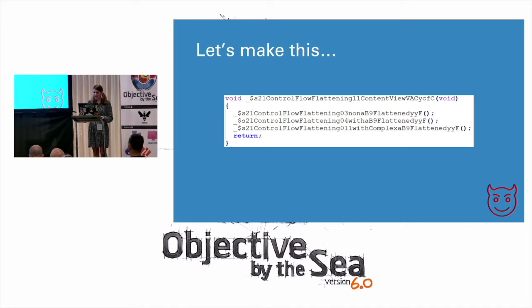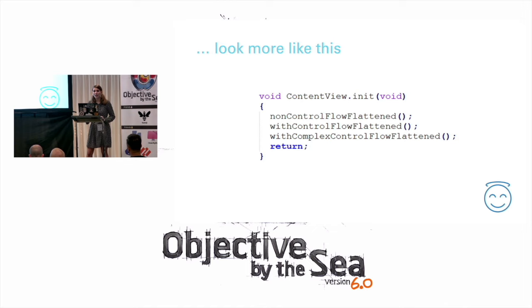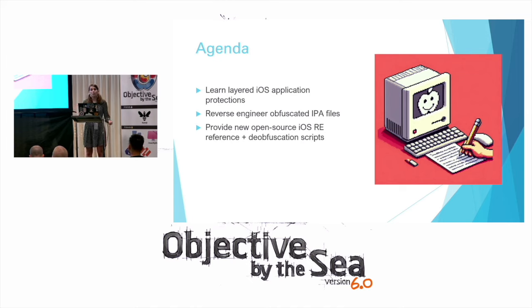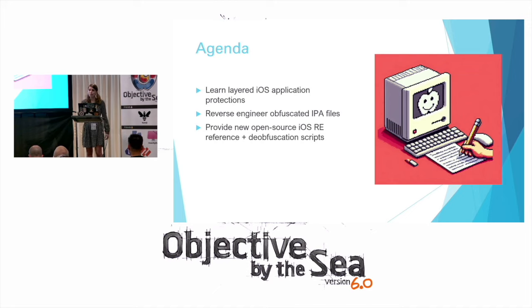Let's get right into it. Let's take this mangled iOS application code and de-mangle and de-obfuscate some Swift and Objective-C iOS application binaries and make them look more readable. Our agenda today: we're going to learn about the layered approach to iOS application protections, reverse engineer some obfuscated iOS IPA binaries, and I'm going to provide a new open-source repository with an iOS reverse engineering wiki, custom Ghidra scripts, and example iOS IPA files for practice.